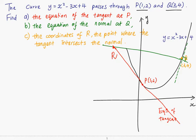So let's start off by finding the equation of the tangent and equation of the normal. We start off by doing dy/dx to find the gradient at P and Q. So dy/dx is equal to 2x minus 3.